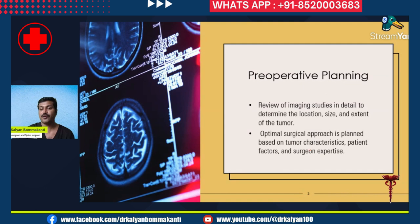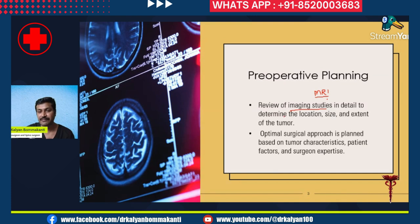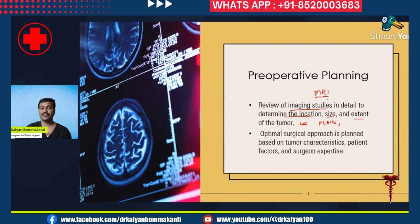For pre-operative planning, the most important step is review of imaging studies — the MRI. Spend sufficient time reading the MRI, both the plain images and the contrast images. Determine the exact location, size, and extent of the tumor. Also look for other characteristics: is there a plane, is the tumor well defined, look for the plane on T2-weighted images, and look for features like presence of calcification, presence of cyst, and tumor edema.